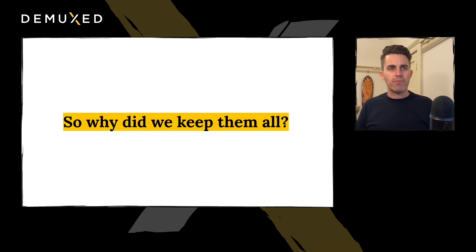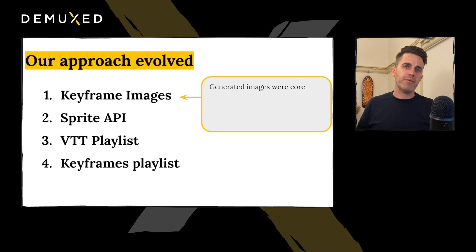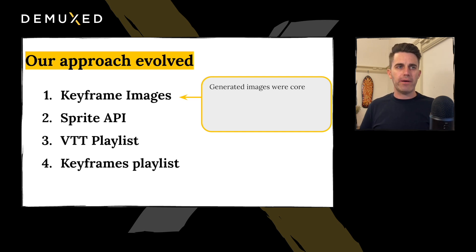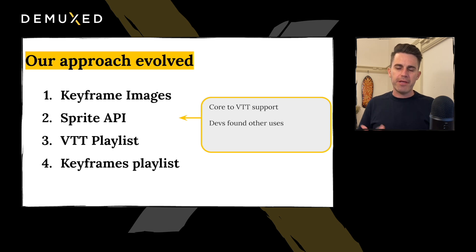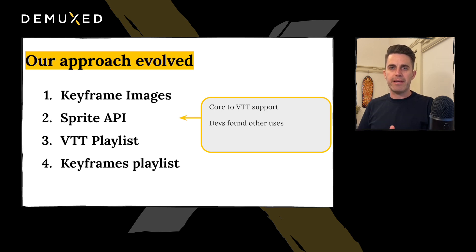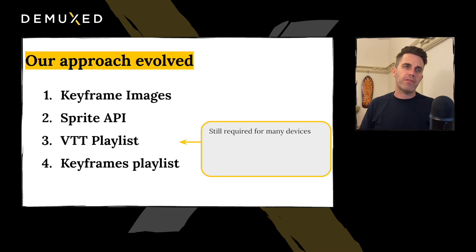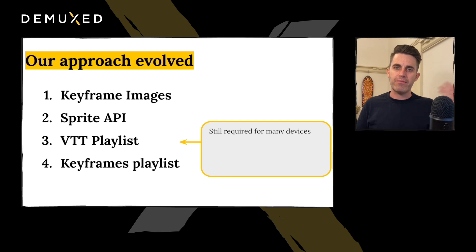So we had four solutions — why did we keep them all? The keyframe images were the core of all of these solutions. Creating those images at those intervals was how we were able to build this feature out into other variants. The Sprite API was core to VTT support, but developers also found other uses for the Sprite API — being able to quickly pull out a keyframe at a specific position to create user experiences, like resuming a paused video. The VTT playlist was used on many devices and we still use it on many devices, even though we have a keyframe playlist, because certain players just wouldn't support it.